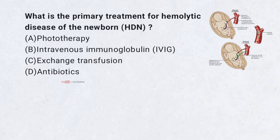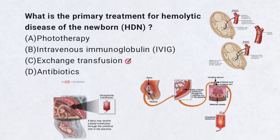What is the primary treatment for hemolytic disease of the newborn? A. Phototherapy, B. Intravenous immunoglobulin, C. Exchange transfusion, D. Antibiotics. Correct answer: C. Exchange transfusion. Exchange transfusion removes maternal antibodies and bilirubin in severe hemolytic disease of the newborn.